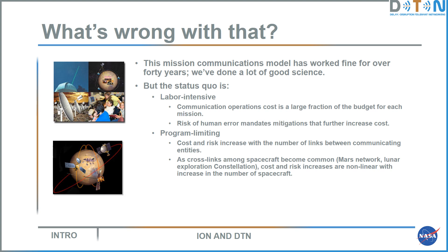So what's wrong with that? Certainly the mission communications model used for the last 40 years has worked fine, and we've done a lot of good science with deep space spacecraft. But it is labor intensive — communication operations costs are a fairly substantial fraction of mission budgets. The risk of human error means mitigations must be implemented that increase costs further. And it's program-limiting: costs and risks increase non-linearly, essentially exponentially, as the number of spacecraft and crosslinks among them increases.